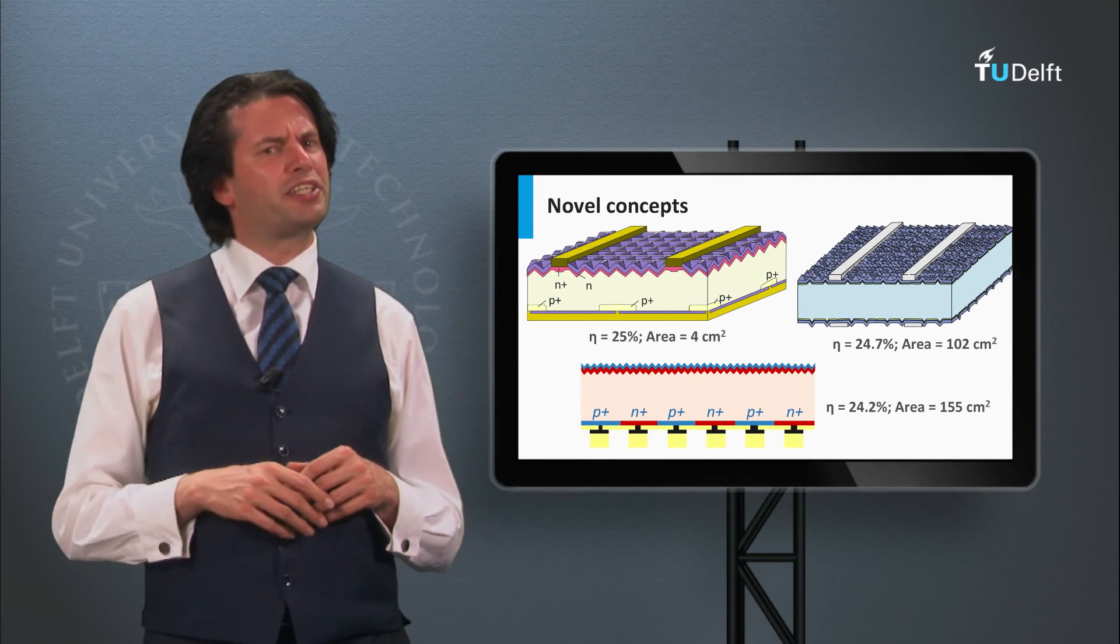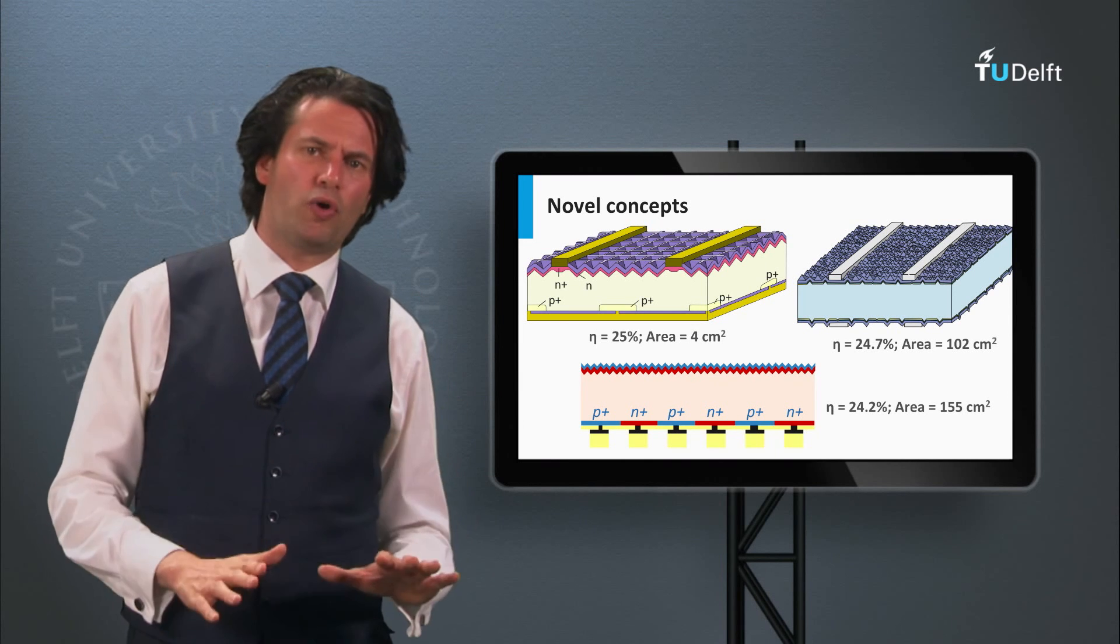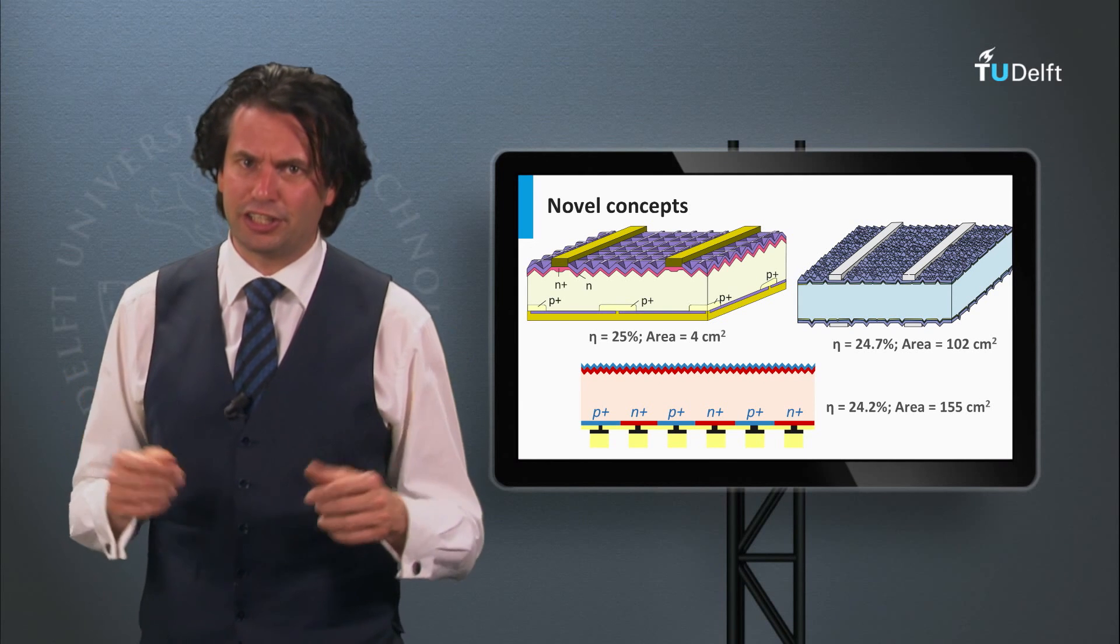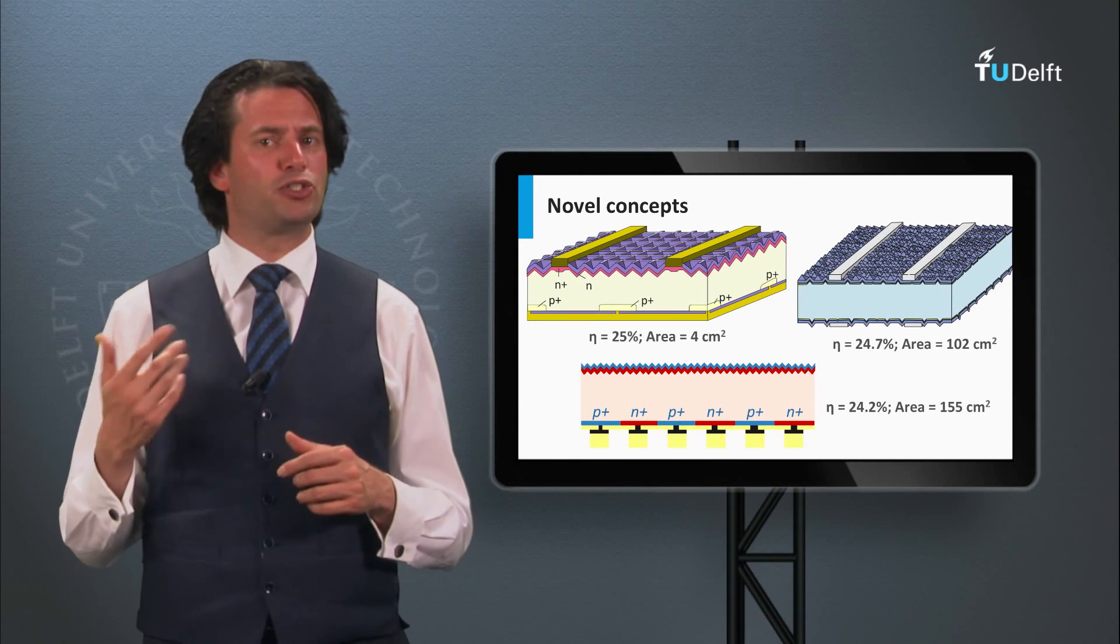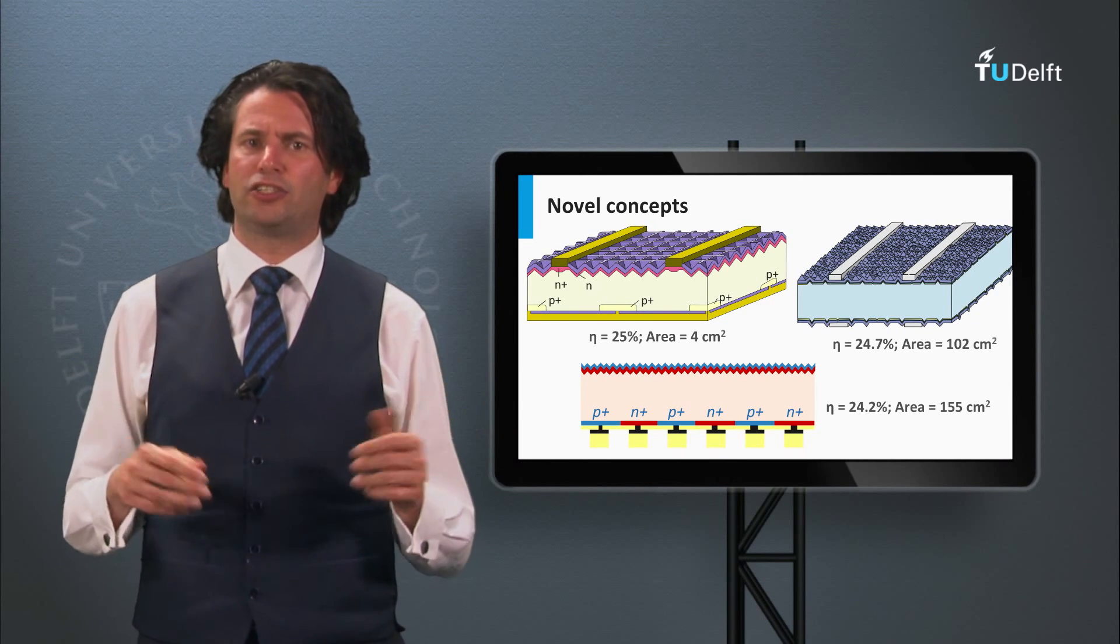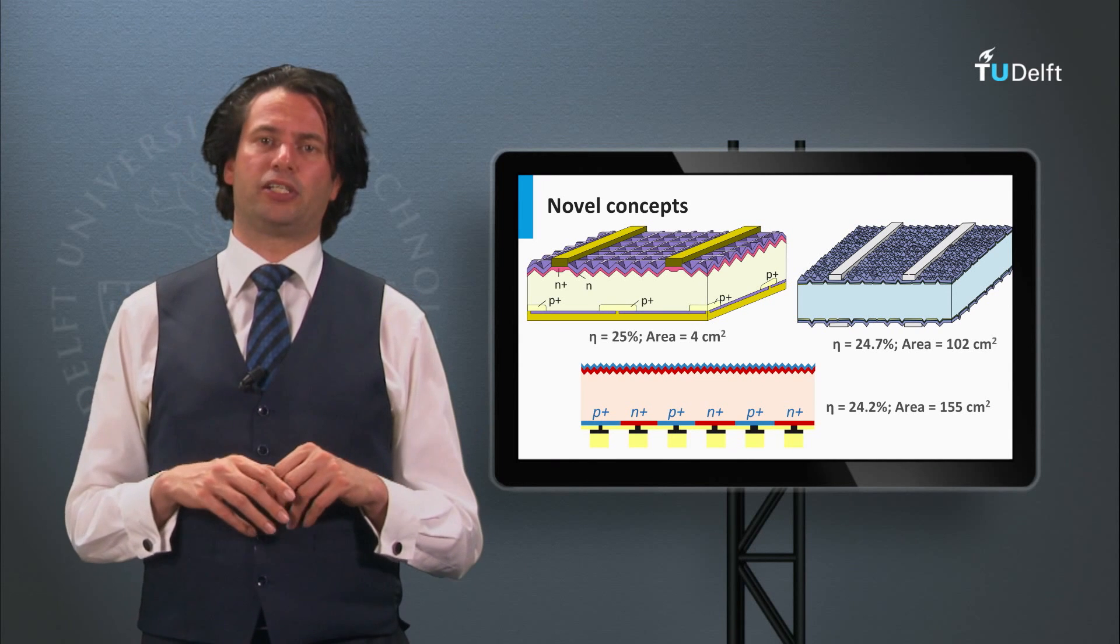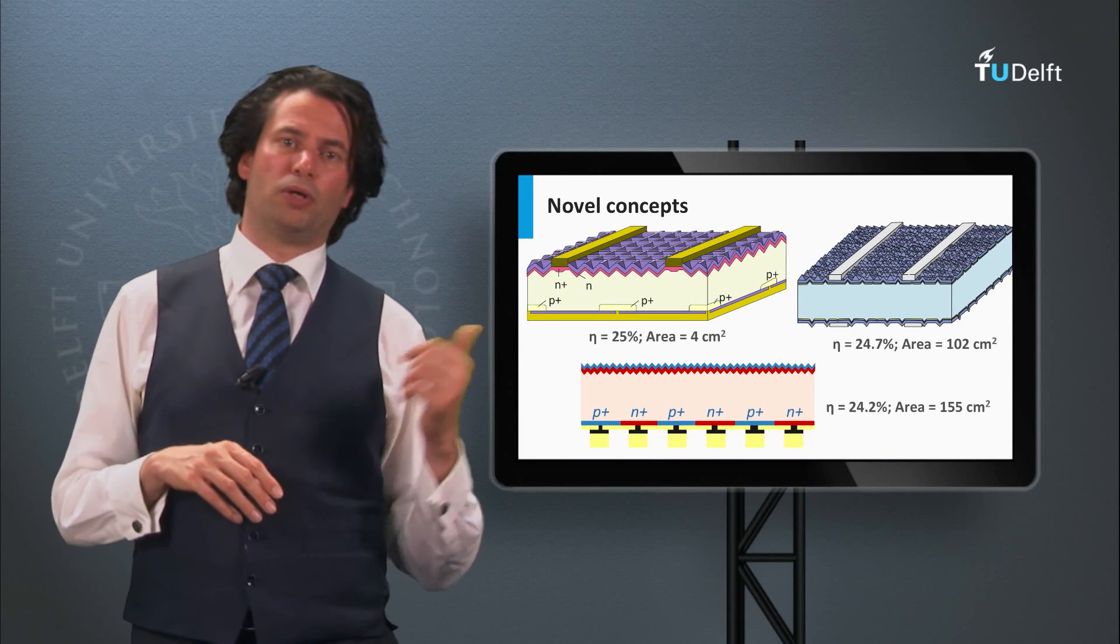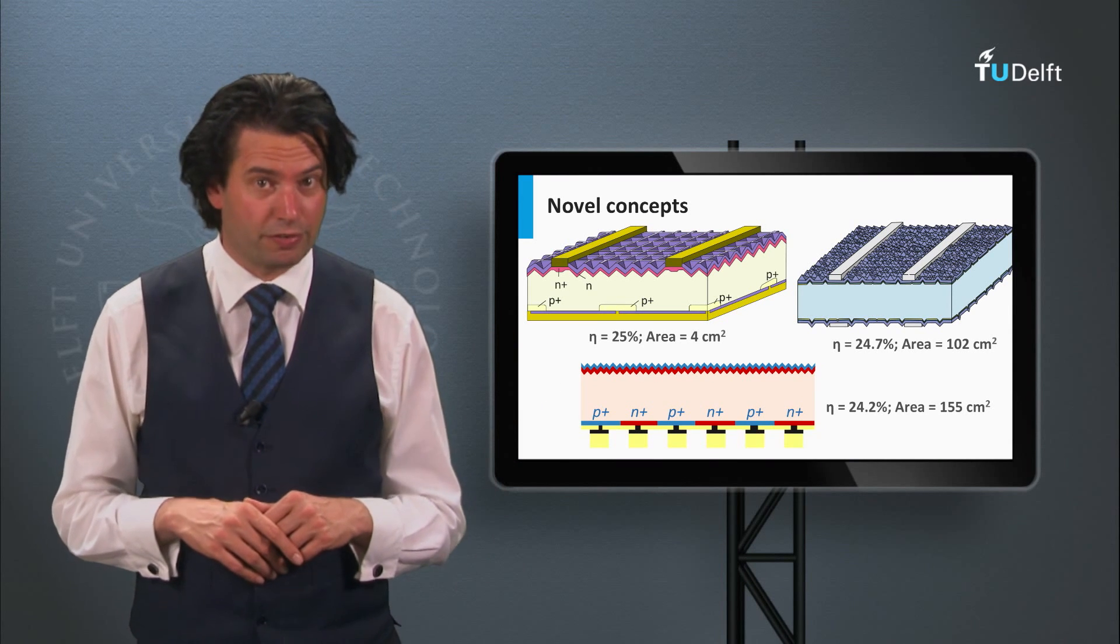The efficiency for multi-crystalline silicon solar cells are lower as the wafer quality is lower. The best efficiency achieved is 19.5% by Q-cells on a wafer with a size of 243 square centimeters. This is about 5% absolute below the record efficiencies based on monocrystalline silicon wafer.